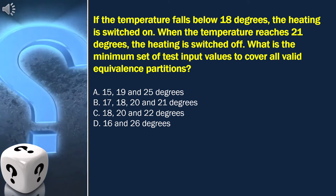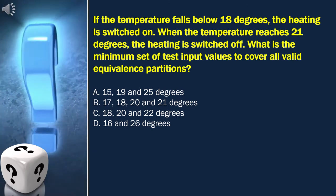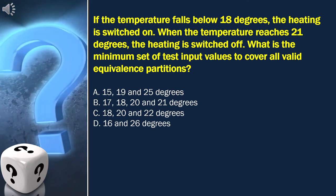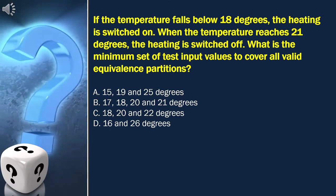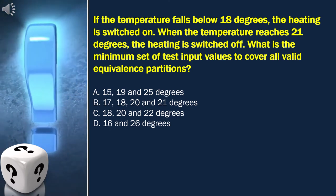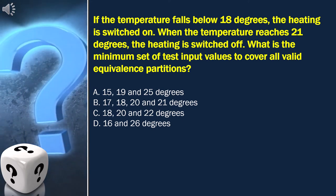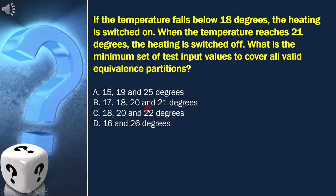Here, the question is: if the temperature falls below 18 degrees, the heating is switched on. When the temperature reaches 21 degrees, the heating is switched off. What is the minimum set of test input values to cover all valid equivalent partitions? And these are our options.